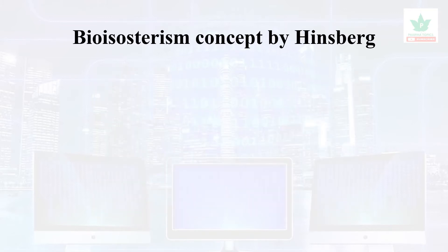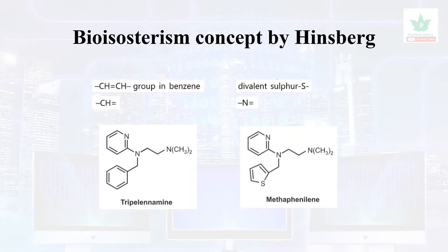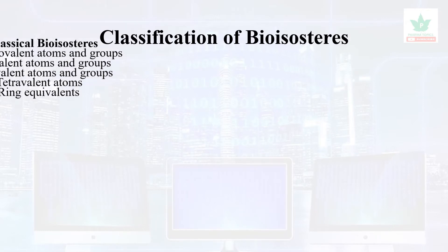Hinsberg proposed that CH=CH could be interchanged with CH=N, or S could be interchanged with nitrogen. For example, in tripelennamine, the benzene group has been replaced with a thiophene group, and the antihistaminic activity increased. This concept was introduced by Hinsberg.